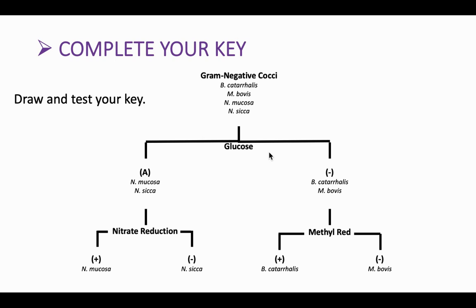Now that we've looked at our data in step one and in step two organized that data and started to map out how we'd organize our key, the last part is to actually draw that key out, put all the data together, and organize that flowchart and test it against the original data.